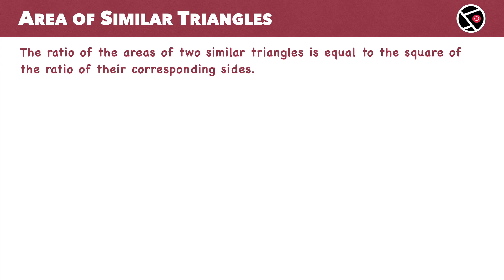Today, we'll be talking about similar triangles. We shall prove that the ratio of the areas of two similar triangles is equal to the square of the ratio of their corresponding sides.